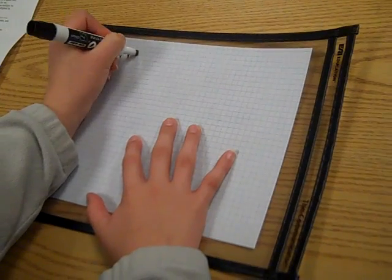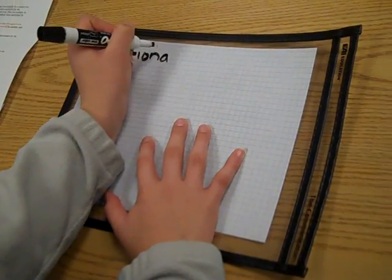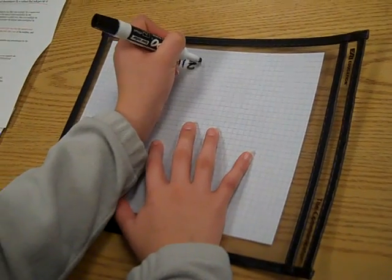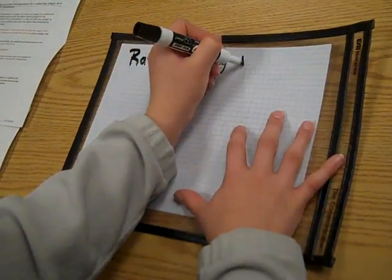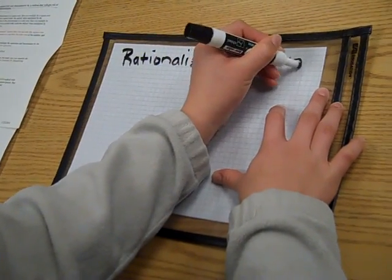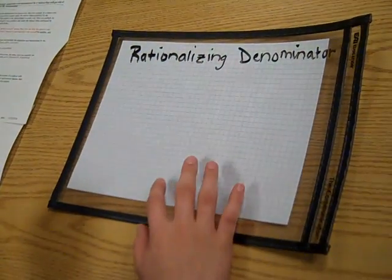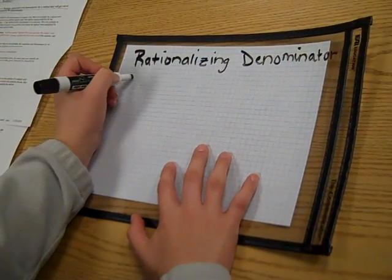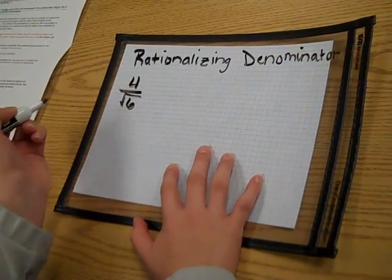Rationalizing Denominators. We'll start with 4 over square root of 6.